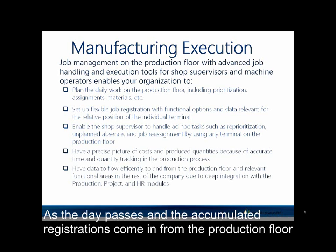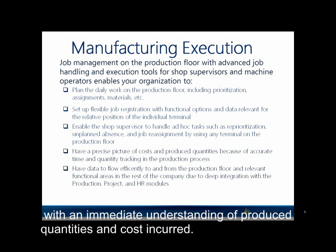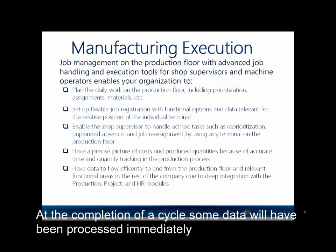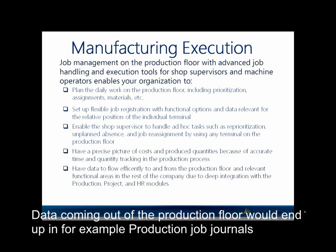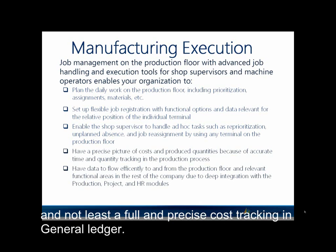As the day passes and the accumulated registrations come in from the production floor, the enterprise will have a far more accurate picture of the current state of the production process, with an immediate understanding of produced quantities and cost incurred. At the completion of a cycle, some data will have been processed immediately, and some will have been processed after an automatic or manual approval process. Data coming out of the production floor would end up in, for example, production job journals, project journals for engineer-to-order companies, HR and payroll for absence and attendance registrations, and at least a full and precise cost tracking in general ledger.